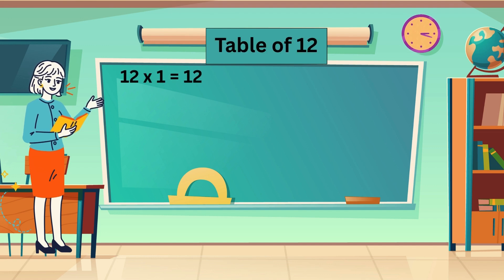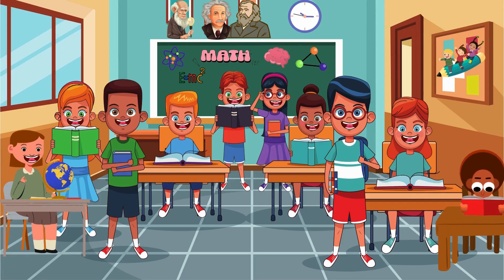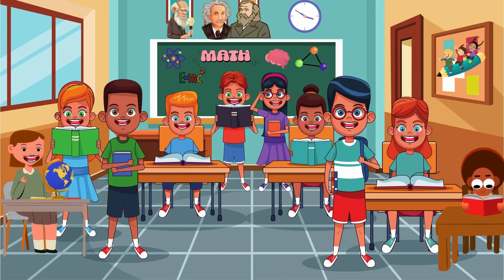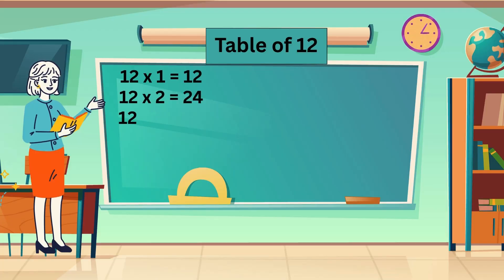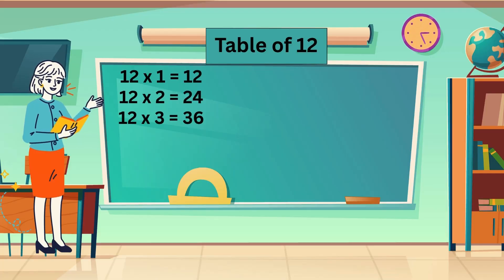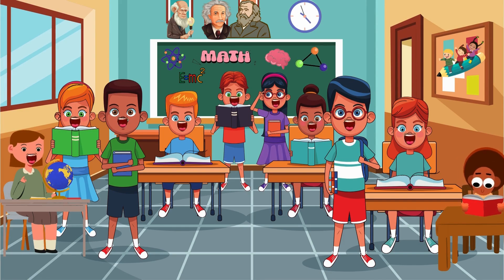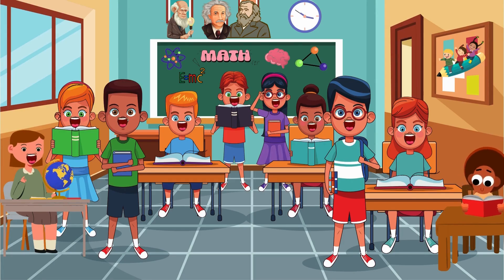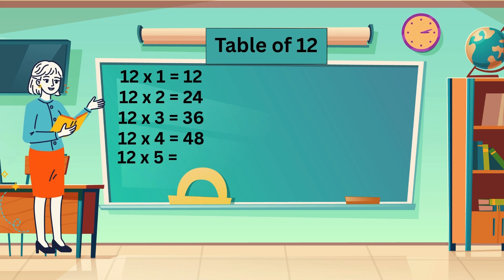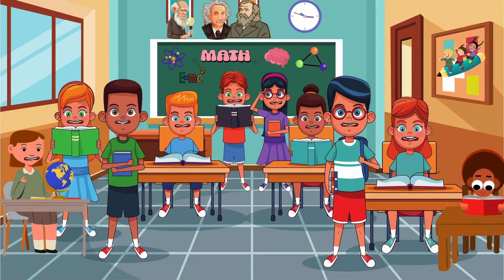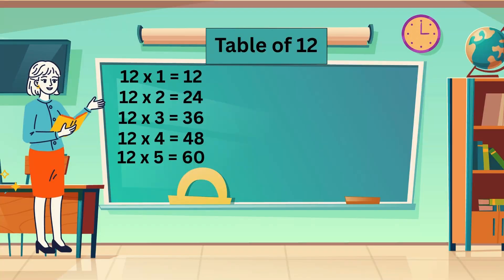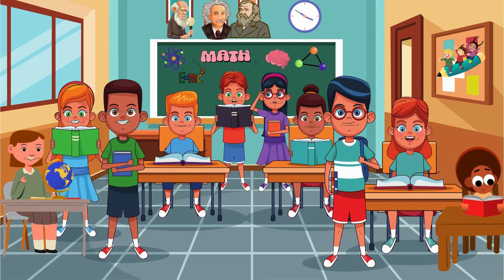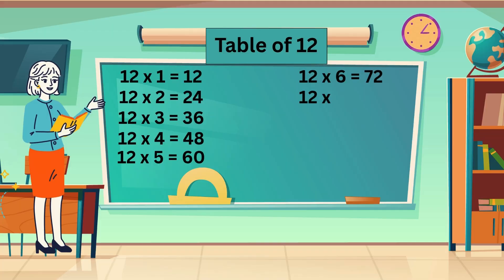Table of 12. 12 ones are 12. 12 twos are 24. 12 threes are 36. 12 fours are 48. 12 fives are 60. 12 sixes are 72. 12 sevens are 84.